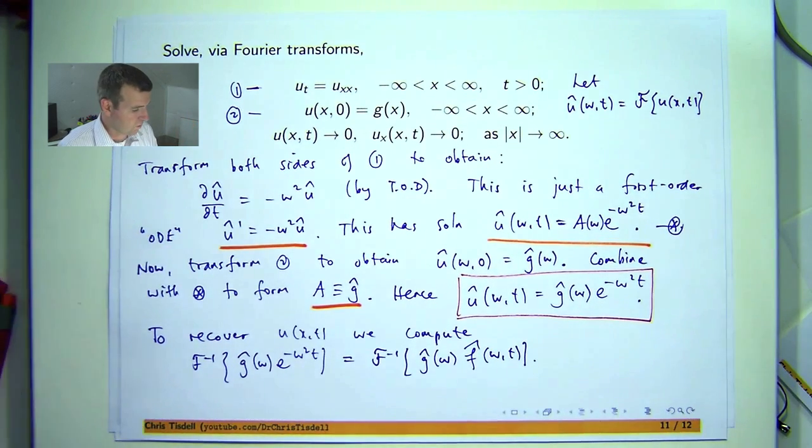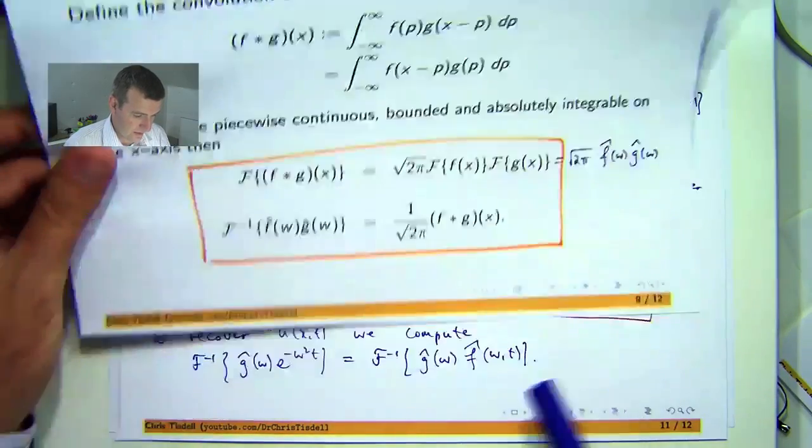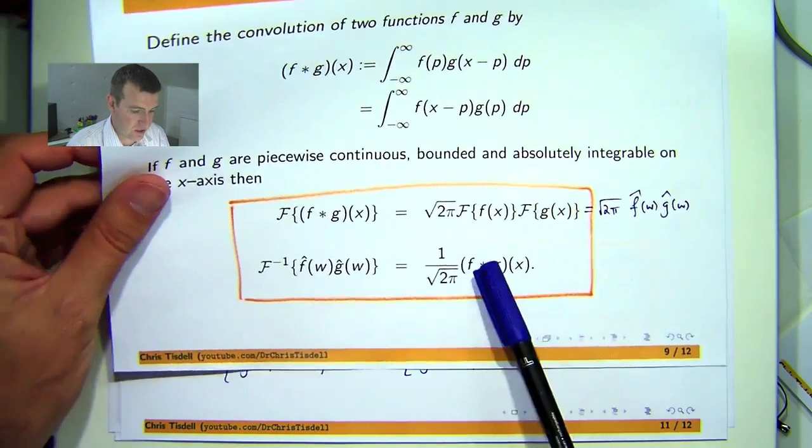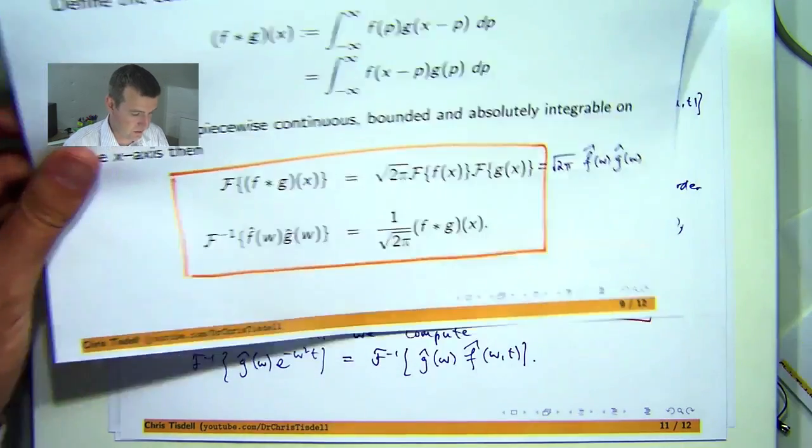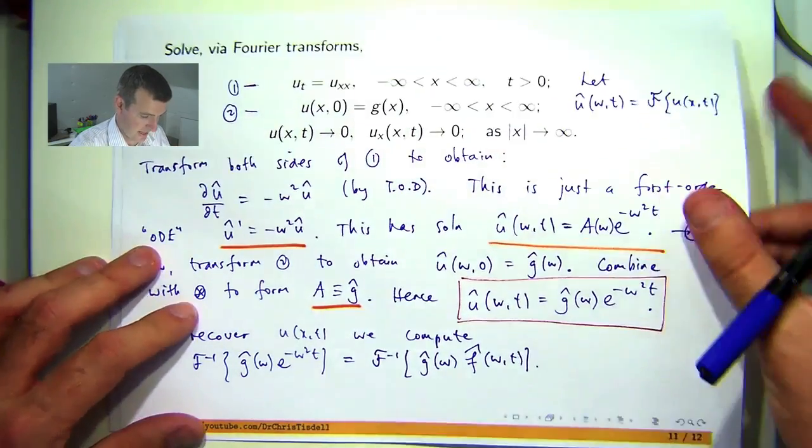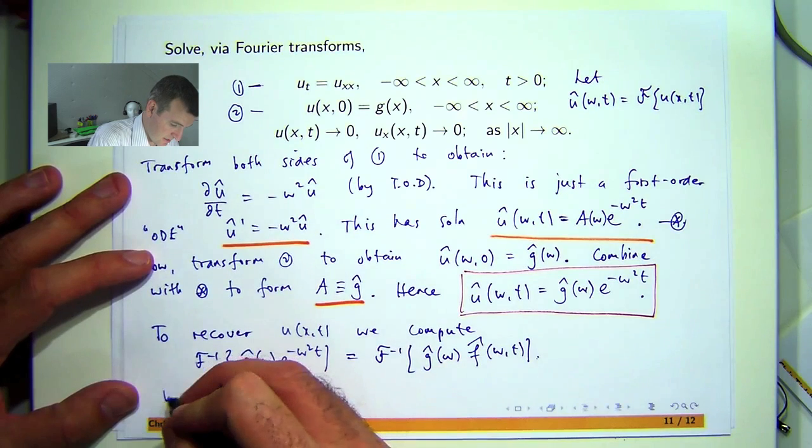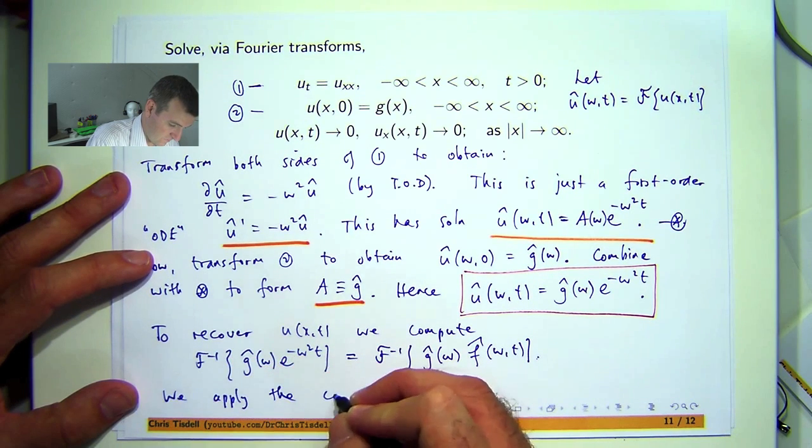All right, so what is the solution to this? Well, we compute g, we compute f, and then we take the convolution and multiply by this constant. That gives us the inverse transform of this, which will give us our solution u. So we're going to apply the convolution theorem.